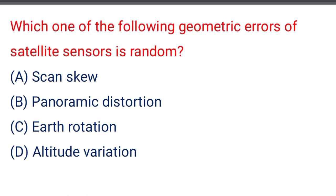Next question: which one of the following geometric errors of satellite sensors is random — option A: scan skew, option B: panoramic distortion, option C: earth rotation, option D: altitude variation. The correct answer is option D: altitude variation.